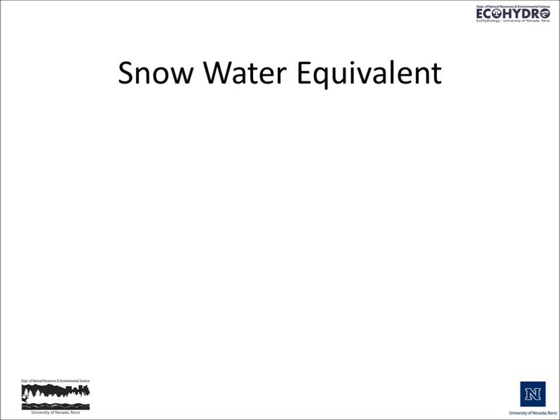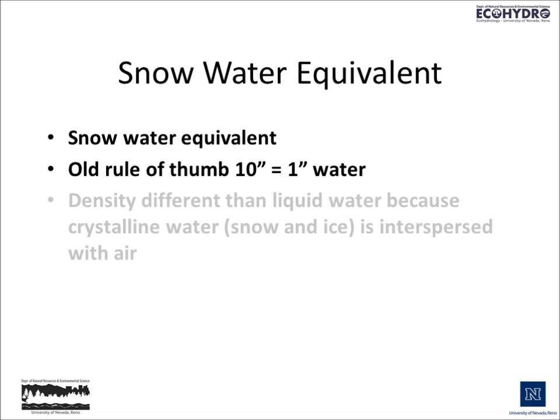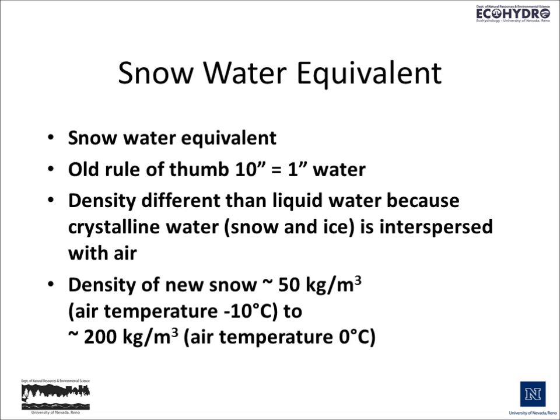The old rule of thumb, when James Church began his work, was that ten inches of snow was equal to one inch of water. As you'll see in a moment, that's an estimate that can be far from correct depending on the characteristics of the snowpack. The density of snow is very different than liquid water because the crystalline water — snow and ice — is interspersed with air, which generally means that the density of snowpack is significantly less than that of liquid water and ice. For example, the density of new snow, fresh powder, can be as little as 50 kilograms per cubic meter at about negative 10 degrees centigrade, up to 200 kilograms per cubic meter when the air temperature is around freezing.